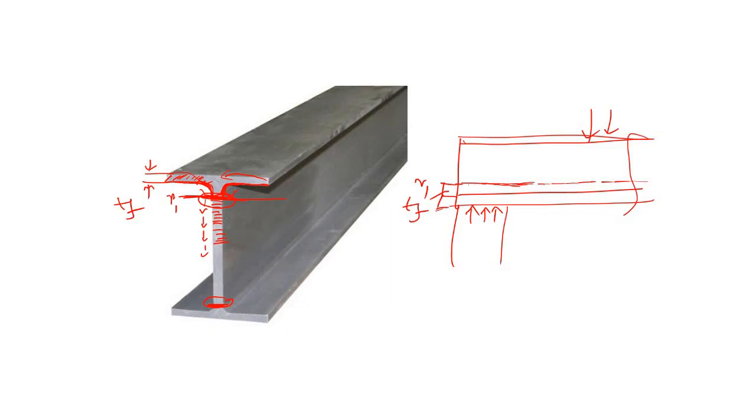If we look at the I-section, we are actually checking here and here it actually cripples like this. This is known as crippling. From this point again we will disperse the load, but here instead of 1 is to 1, we will disperse it at 1 is to 2.5. In the same way we will calculate the strength.